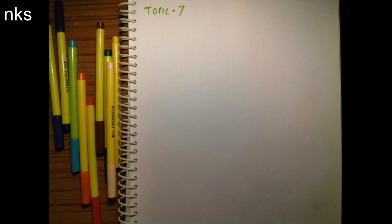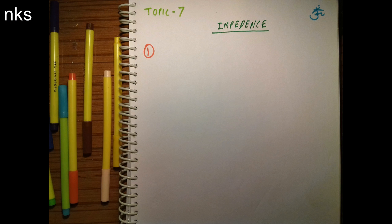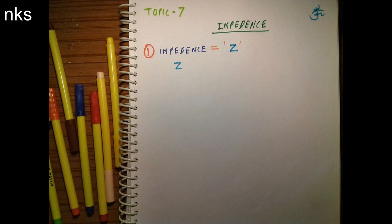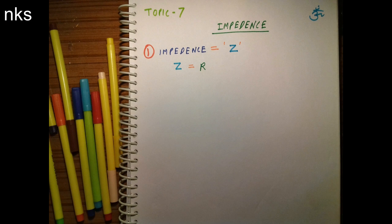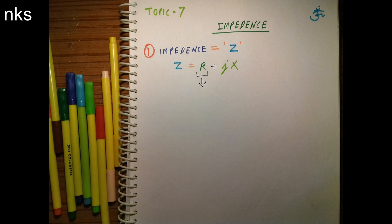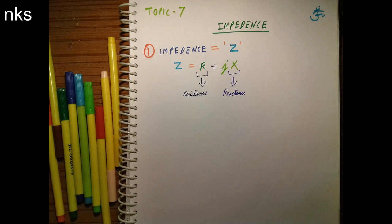Topic 7: Impedance. In this video we will see impedance and other terms related to impedance. Impedance is denoted by Z. Z is equal to R plus Jx, which means Z is a complex term where R is resistance and X is reactance. The unit of both resistance and reactance is ohms, thus the unit of impedance is also ohms.